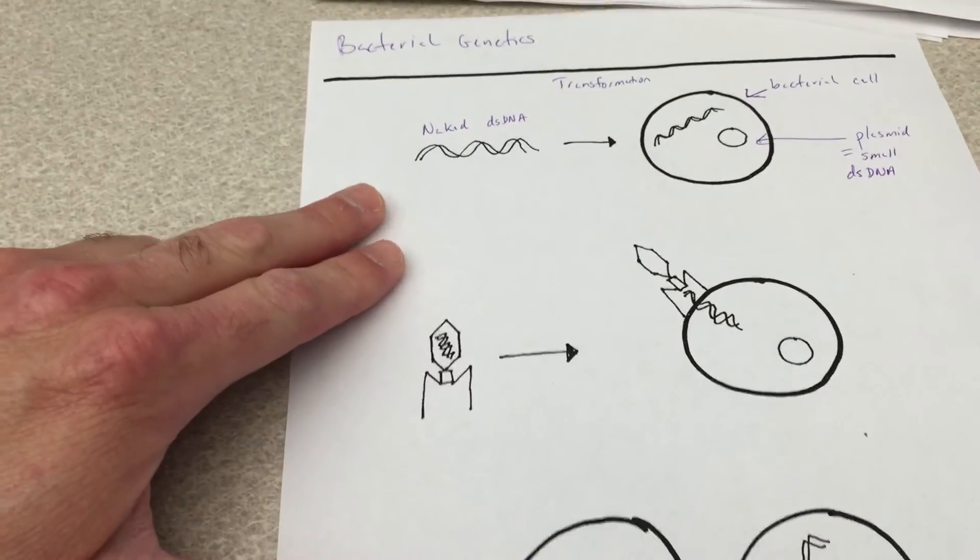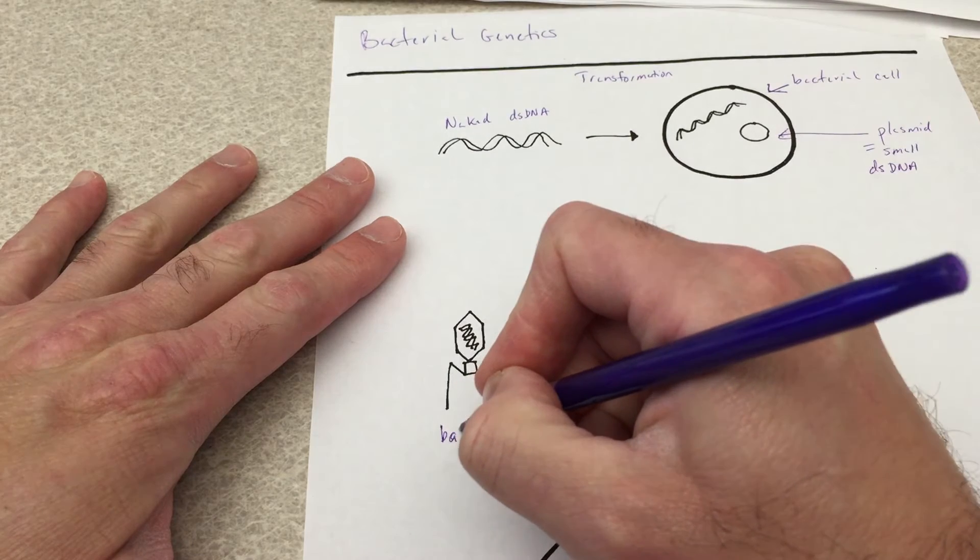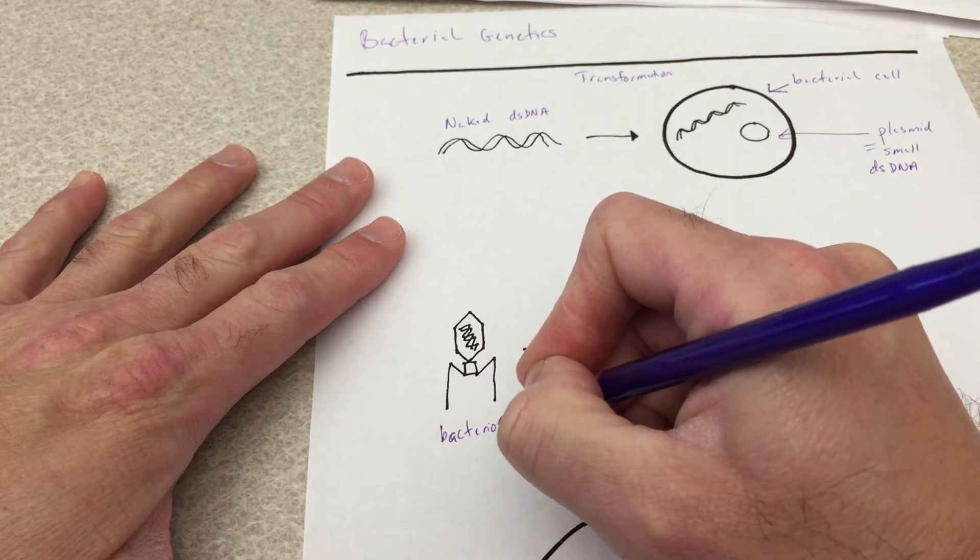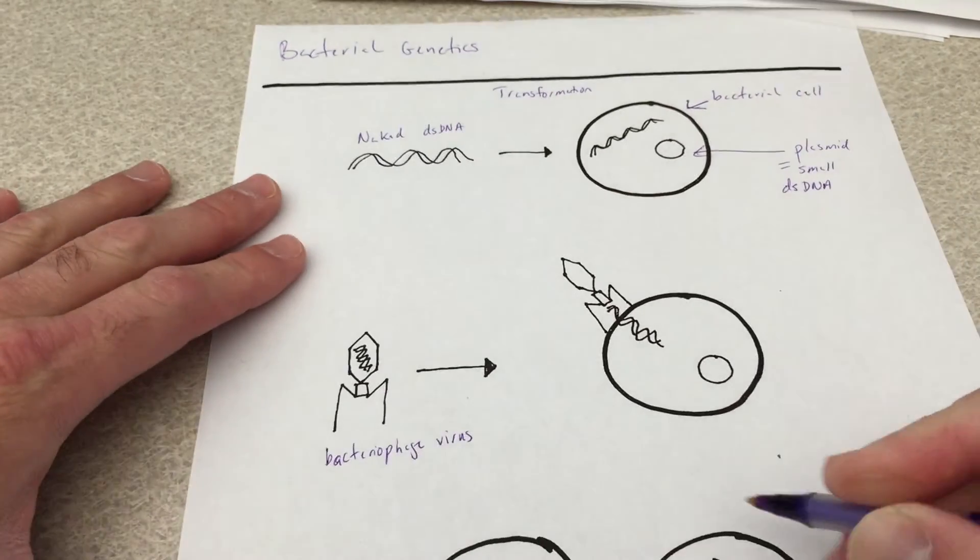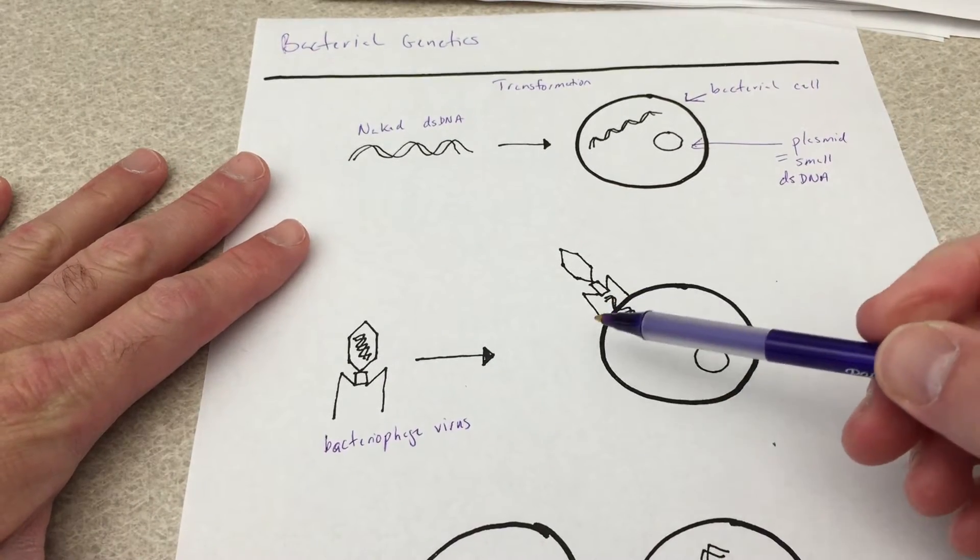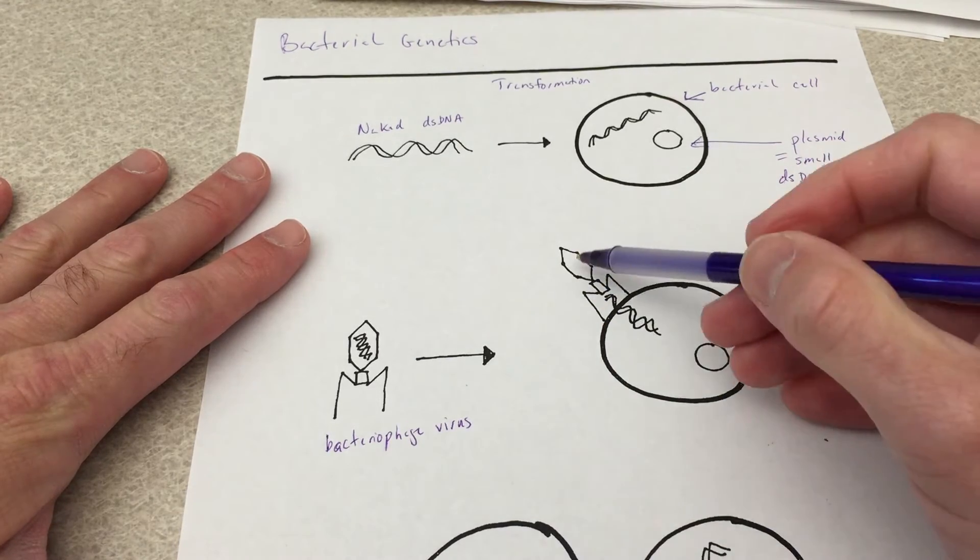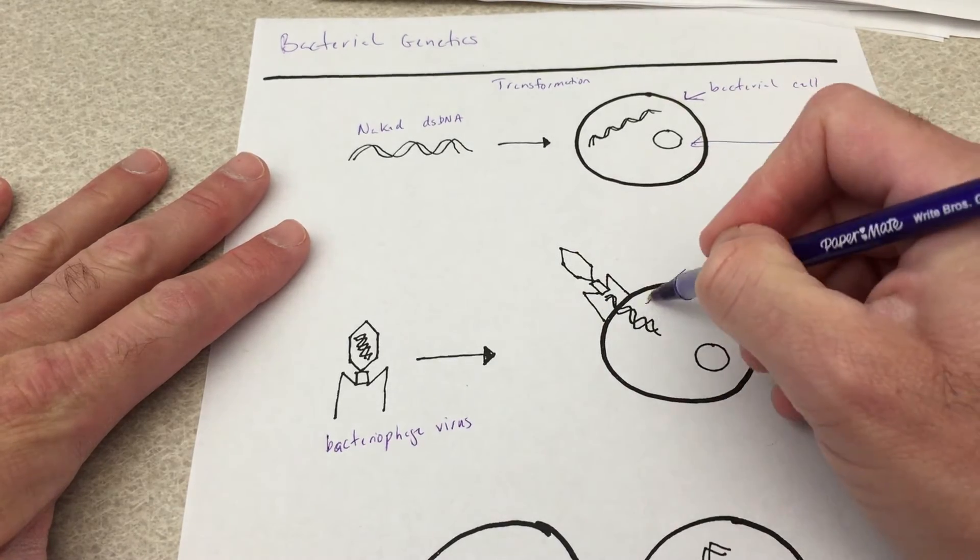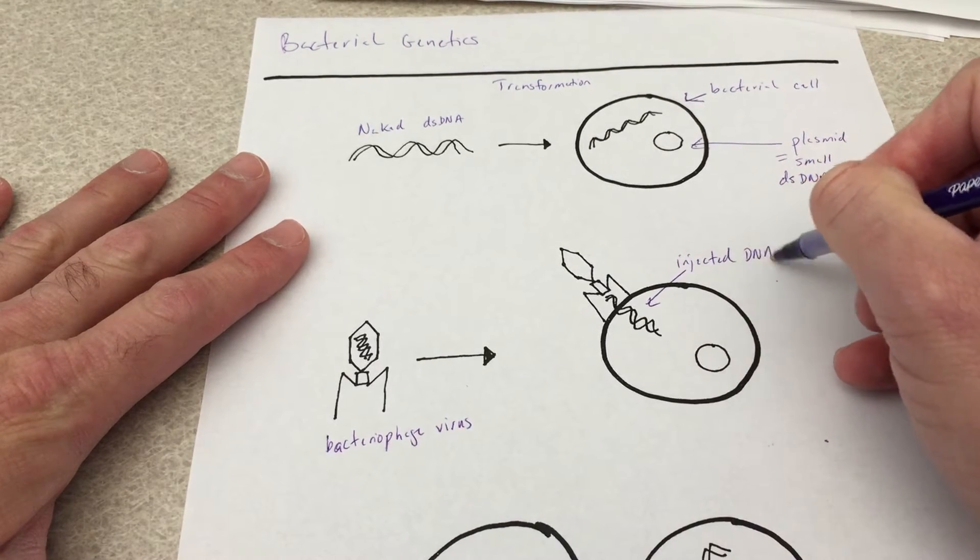Alright, in the next process we have a virus. So here would be a bacteriophage virus, and we learned about the life cycle of viruses, that viruses can attach to bacterial cells and they can inject their DNA.